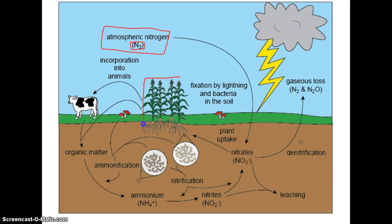Plants desperately need nitrogen from the soil in order to grow — it's an essential nutrient. Producers are critical for the establishment of higher-level organisms in an ecosystem. The problem is that unlike carbon dioxide, which plants can directly take in and use during photosynthesis, plants do not have the machinery to take in atmospheric N₂ nitrogen. This is not something plants can do, so we have a situation.